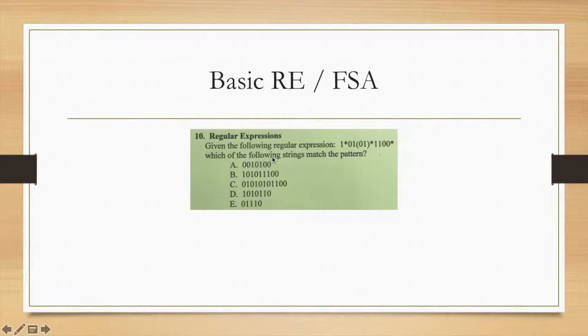Here we've got the following regular expression: one star, zero one, and then parentheses zero one star—so that means zero one repeated as many times as possible—and then it closes out with one one zero zero star. Which of the following strings match that pattern? A will simply not work because it requires two zeros to start. You can have zero ones in the beginning, but then you need a required zero and a required one, so that double zero won't work. B will match if you remove all the stars—it simply reads one zero one zero one one one zero zero, so that's an easy way of determining that B works.